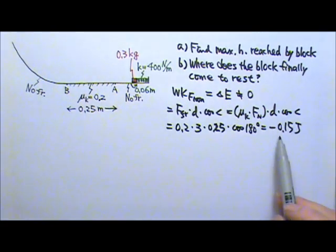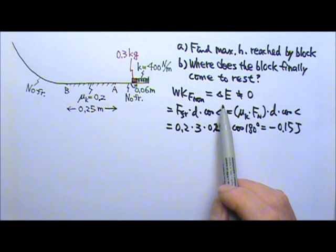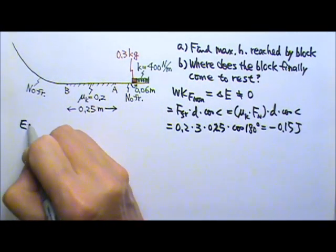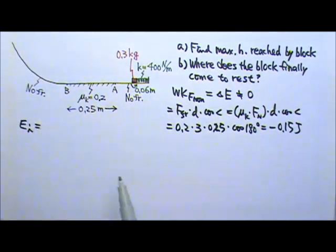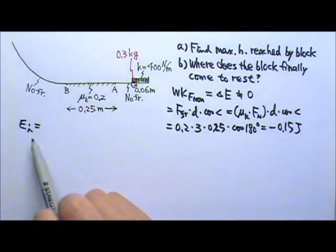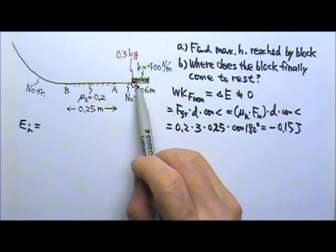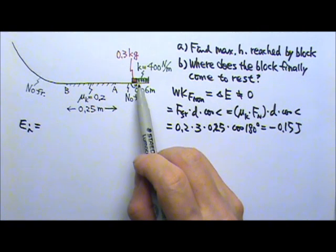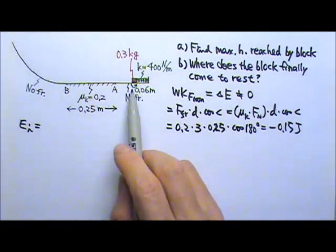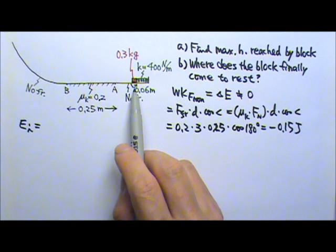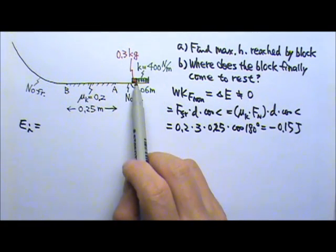This should equal the change in total mechanical energy. Now let's find the initial mechanical energy and the final mechanical energy. Initially the block is pushed into the spring, the moment of the release, the block has no speed.